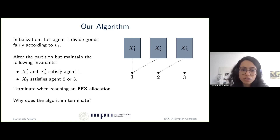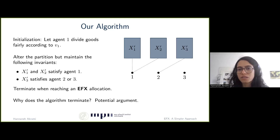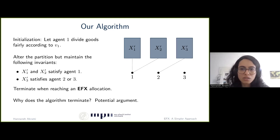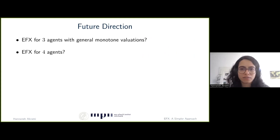As an initialization step, we ask agent one to divide the goods into three bundles she finds satisfactory, then assume we are in the bad case where agents two and three both prefer only one bundle. The idea is to alter the partition X1, X2, X3 into X1', X2', X3', maintaining invariants: the first two bundles are satisfactory to agent one, and the last bundle is satisfactory to at least agent two or agent three. We move through complete partitions maintaining these invariants, terminating at an EFX allocation when the corresponding graph has a perfect matching. The algorithm terminates because we prove through a potential argument that no state is revisited.